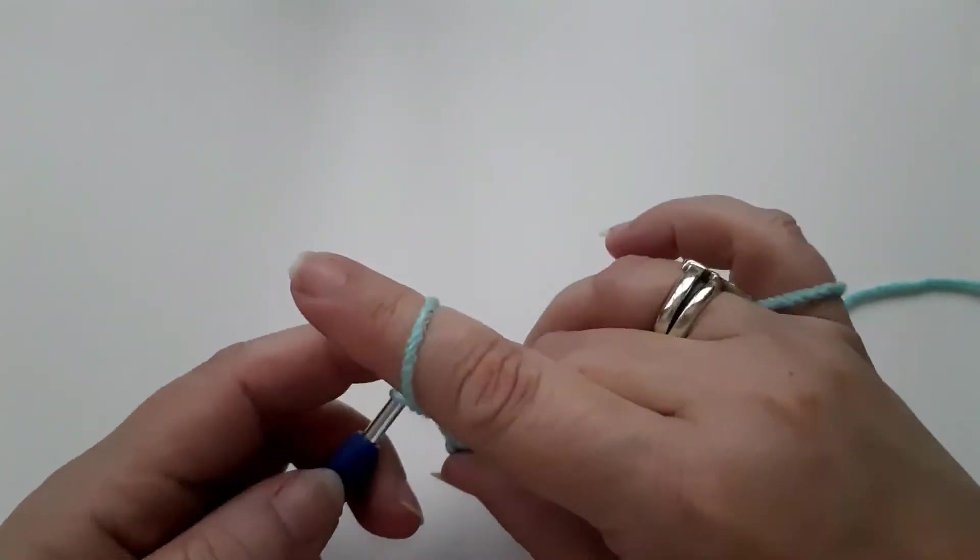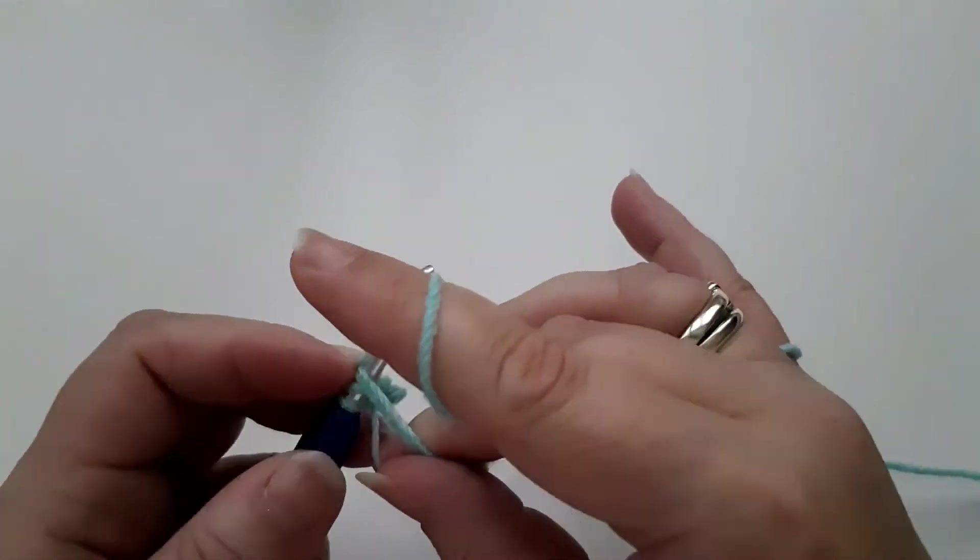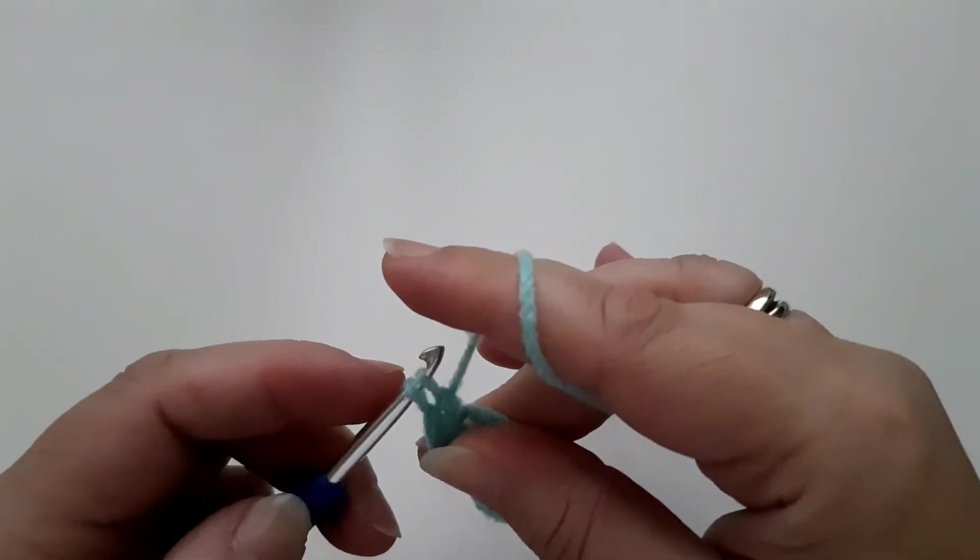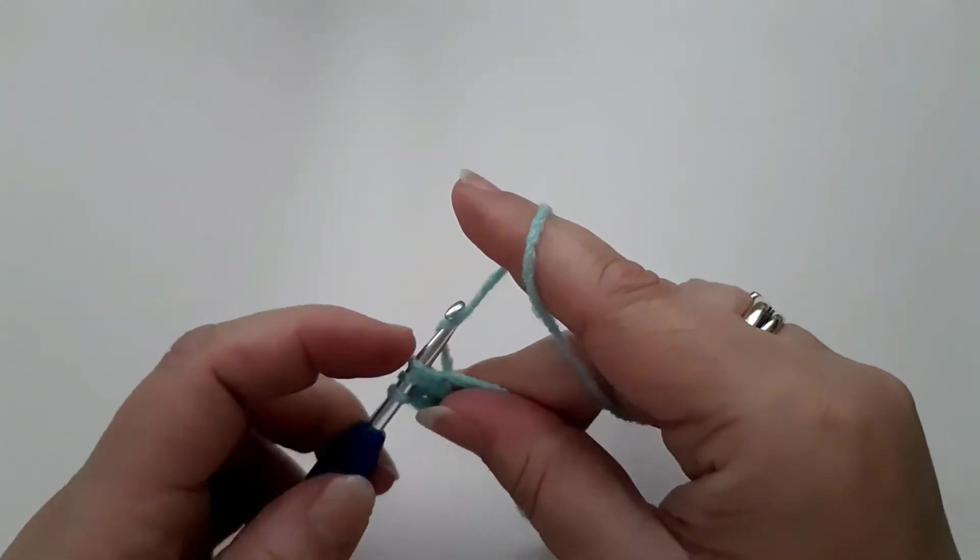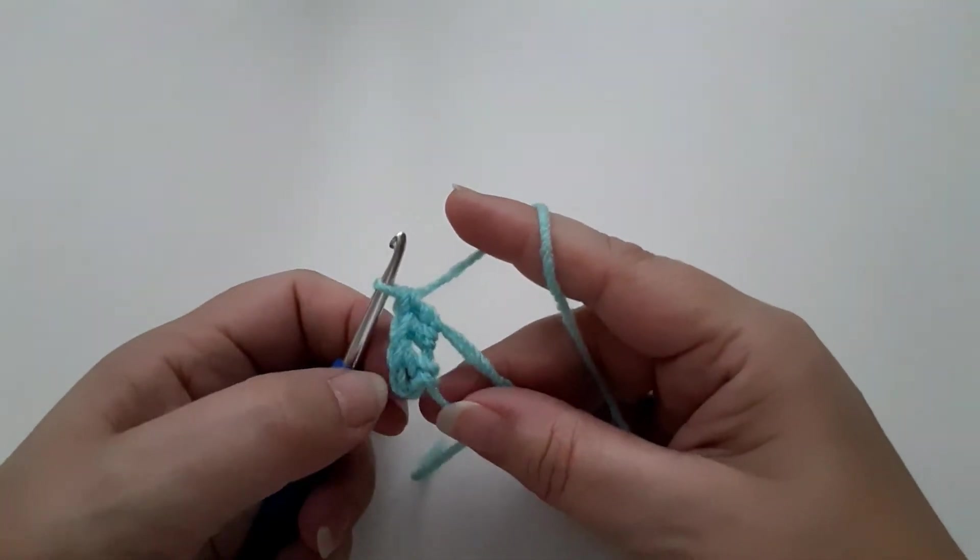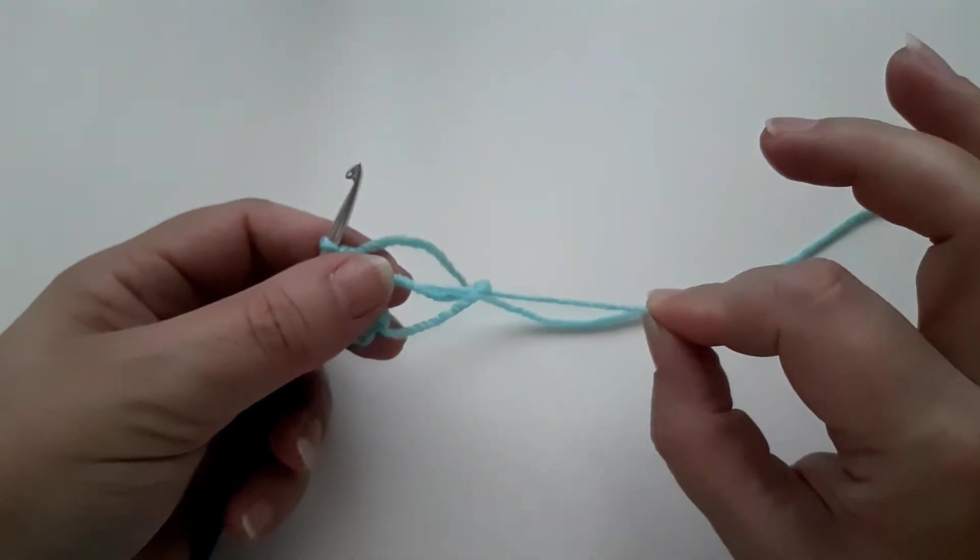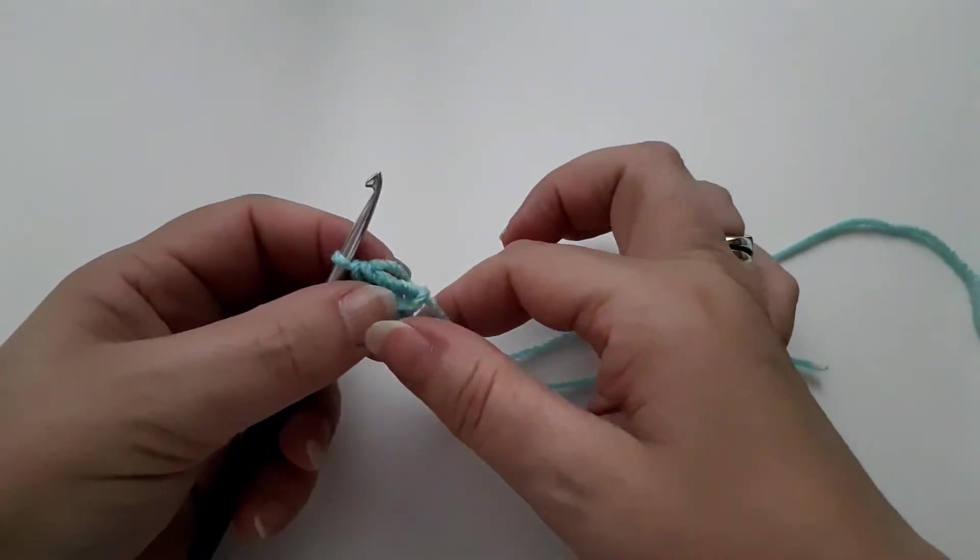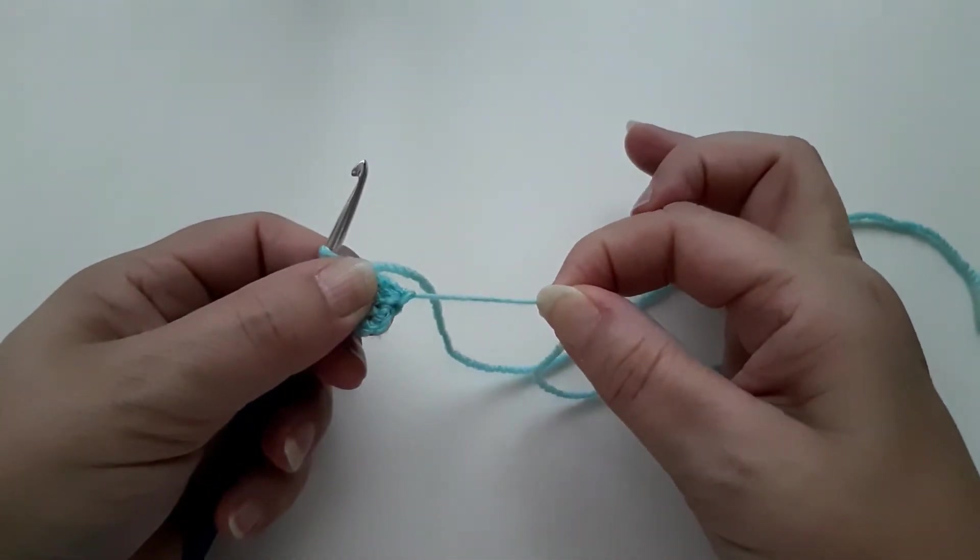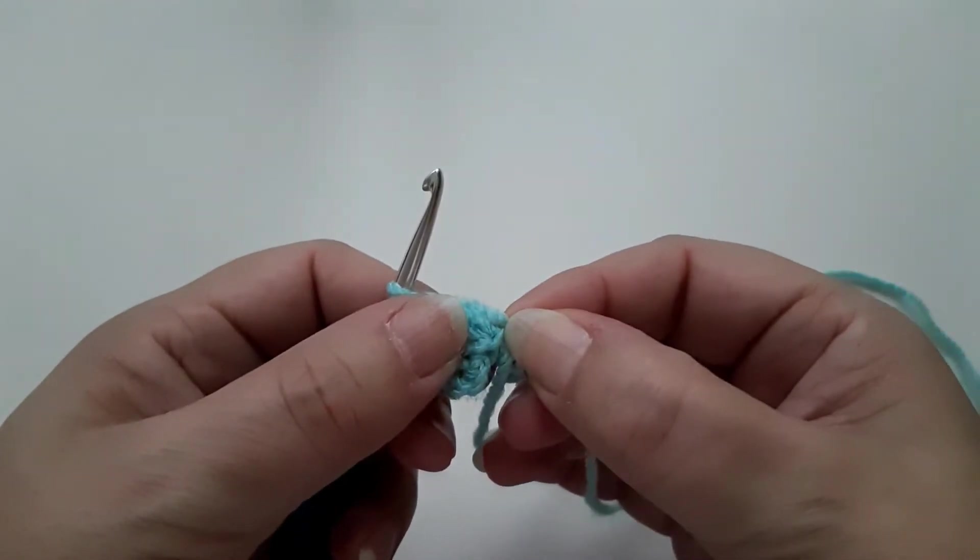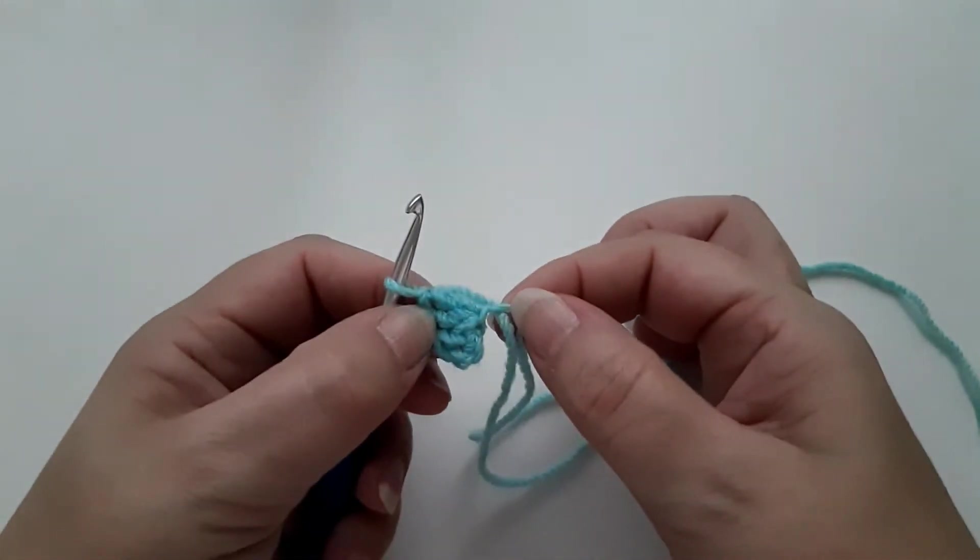So I've got one chain on there already, one, two, three, I'm going to do a treble, one, two, three. Okay, so I've got my three chain, one treble, two treble, three treble and then you pull the tail. Now if you weren't doing a magic ring you would probably end up with a circle of chains here, but if you pull you can see that this actually closes up really quite small.